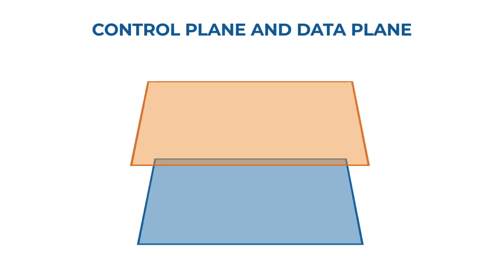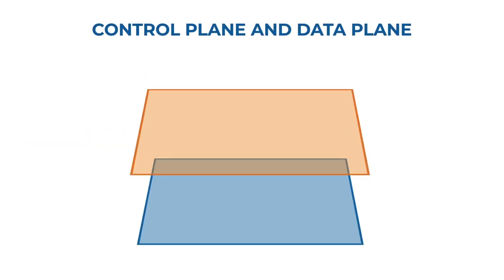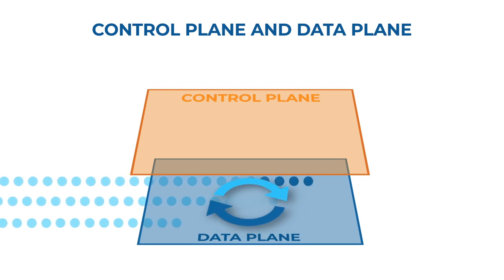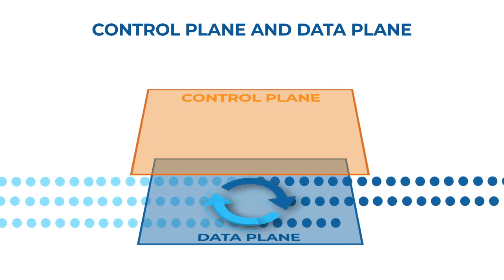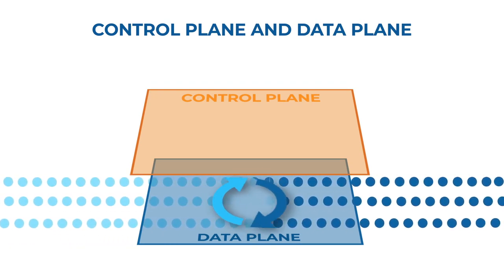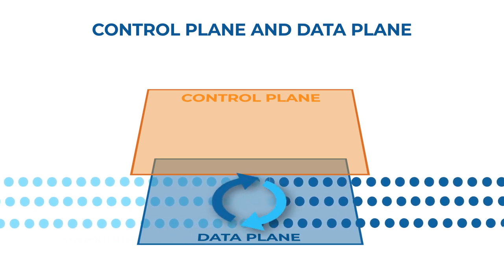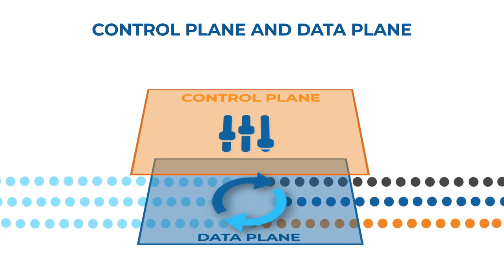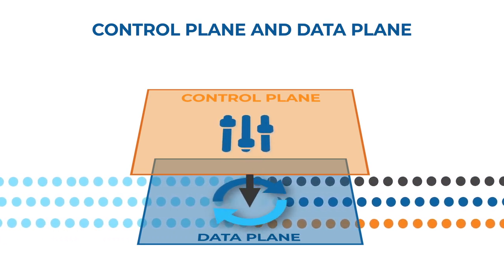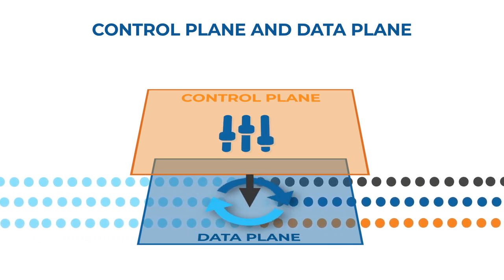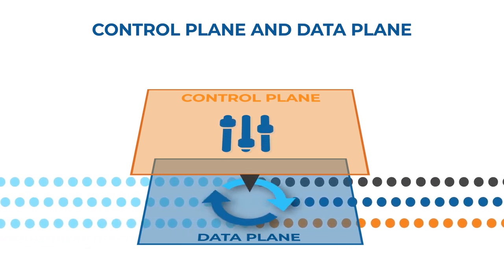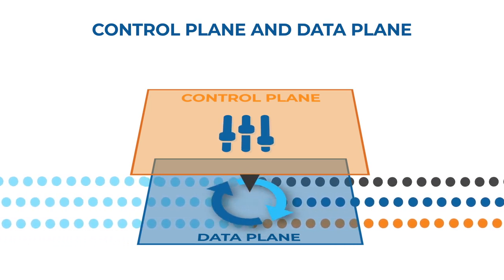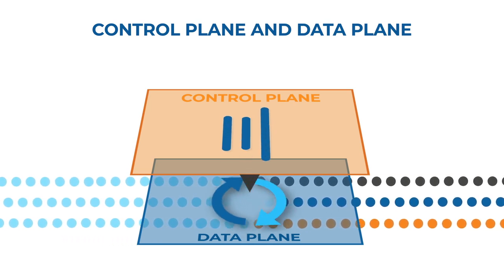A common approach is to view engineering systems as two logical constructs: the control plane and the data plane. The data plane is where most of the data transforms happen; it is optimized for speed of processing, simplicity, and regularity. The control plane is what controls the data plane, optimized for decision-making and facilitating and simplifying the data plane processing.